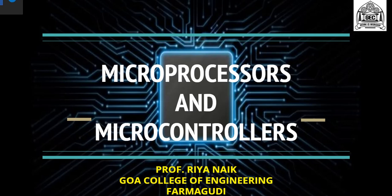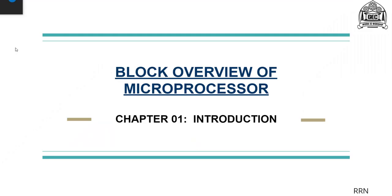Welcome back students. We shall continue with our lecture. In the previous session, we saw different types of microprocessors, their history, and how each processor evolved over time — starting from the 4004 to the 8486, all variants and how they differ. In this session, we are going to learn different classifications of microprocessors and a block overview of the microprocessor. This is our second part in Chapter 1: Introduction.